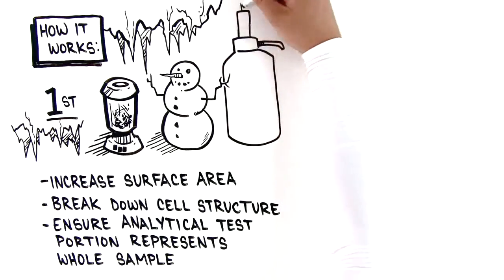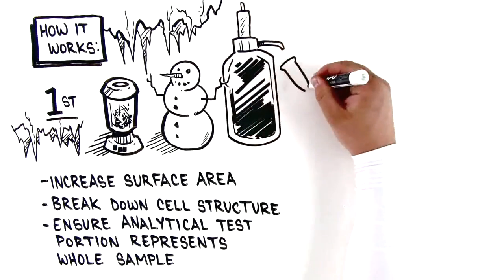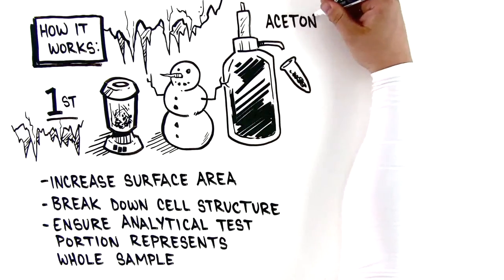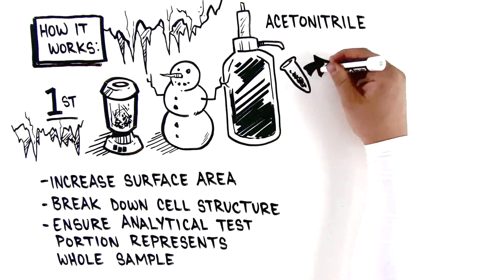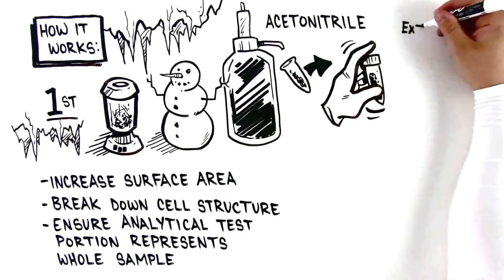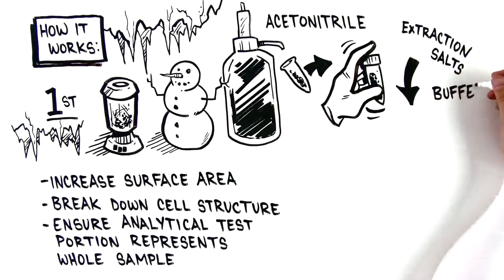Next, add the internal standard and the extraction solvent, typically acetonitrile, into the centrifuge tube with your sample. Shake vigorously, then add the extraction salts and buffers, and shake again.